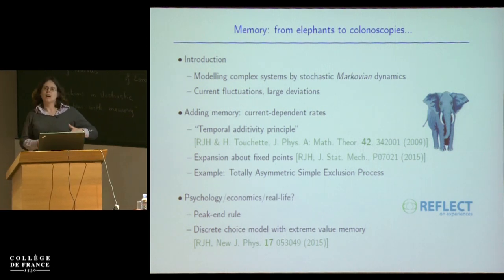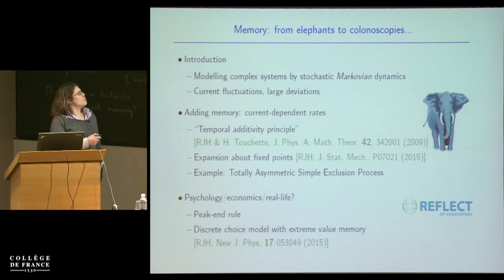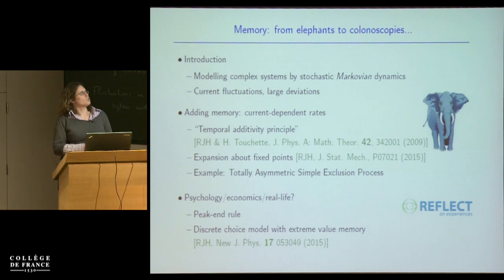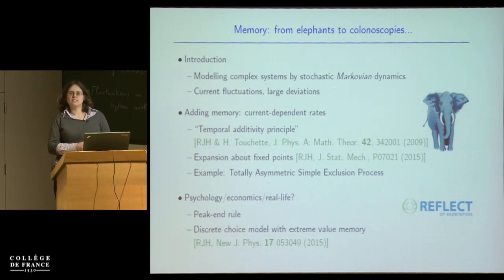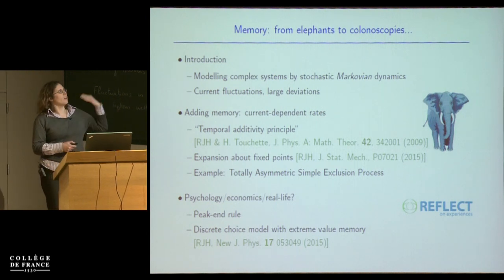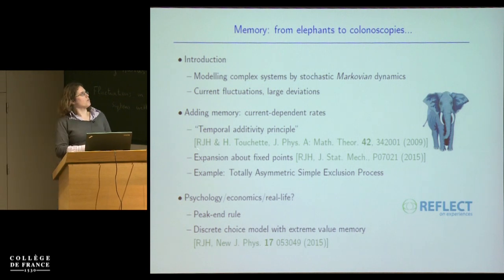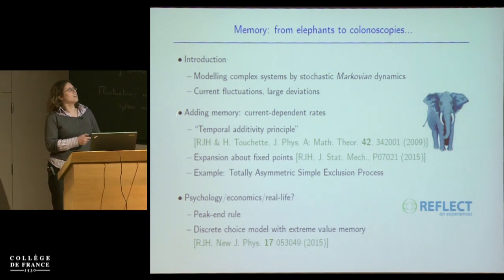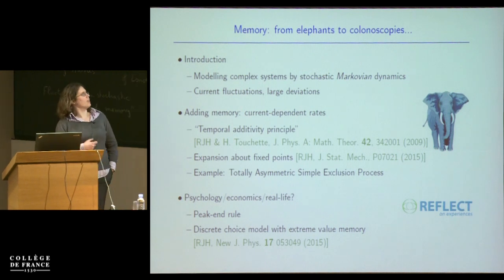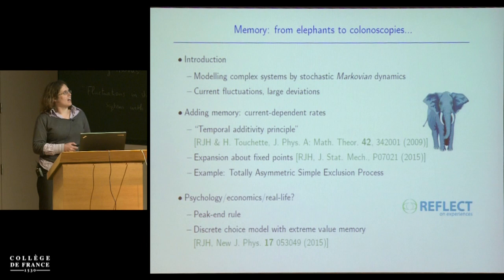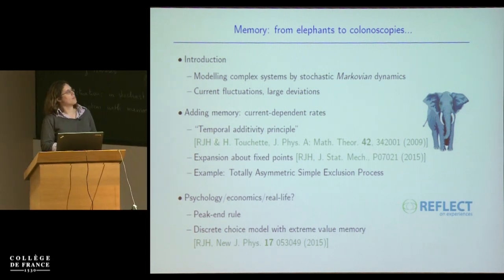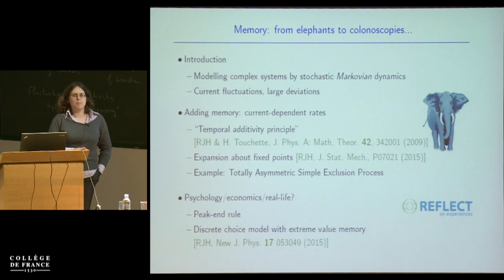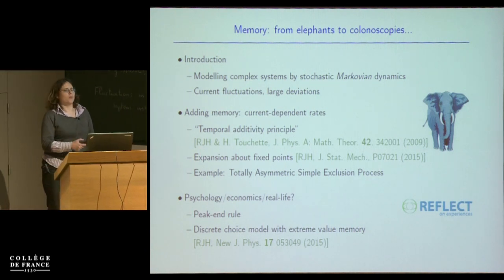Having set up that framework, I'll add some memory in two separate pieces. In the first part, which is slightly more technical, I'll talk about adding memory by making the rates in my system depend somehow on the current — a kind of feedback. I'll describe something we call the temporal additivity principle that allows you in theory to obtain the current fluctuations in this case if you know what they're like in the corresponding case without memory. Then I'll explain why that's almost useless and give instead a kind of approximate expansion about fixed points, applying it to a famous example from non-equilibrium statistical mechanics.